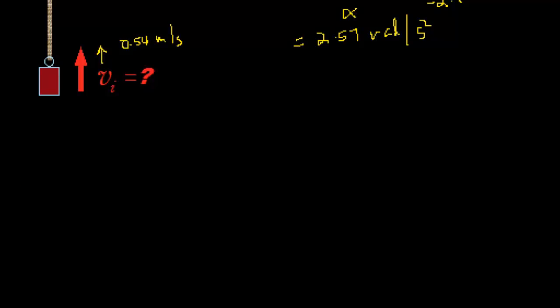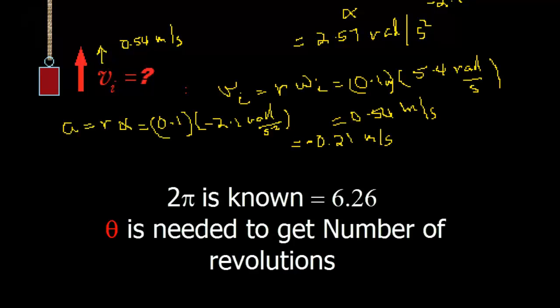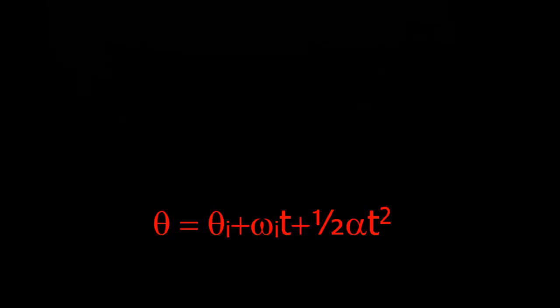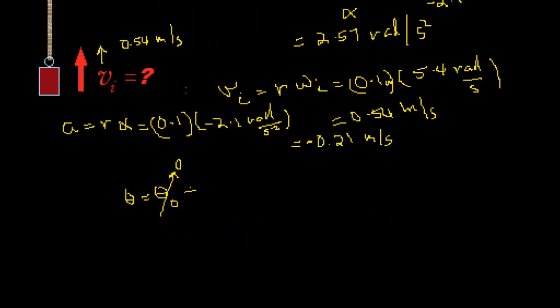The second part of this problem is to figure out how many radians does that pulley turn before it stops. This would equal initial theta, which is 0 plus initial angular velocity times t plus one half angular acceleration times t squared.